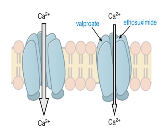You can see calcium influx going on through the high voltage-gated calcium channels and also calcium influx through low voltage-gated calcium channels. Ethosuximide and valproic acid have the capability of blocking these low voltage-gated calcium channels.